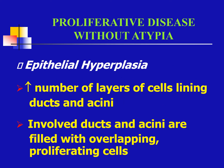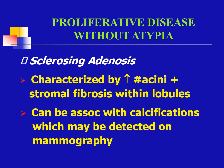There is proliferative disease without atypia. This is your epithelial hyperplasia, which increases the number of layers of cells lining ducts and acini. The involved ducts and acini are filled with overlapping proliferating cells. Another proliferative disease without atypia is sclerosing adenosis, characterized by an increase in the number of acini plus stromal fibrosis within the lobule. These can be associated with calcifications, which may be detected on mammography.